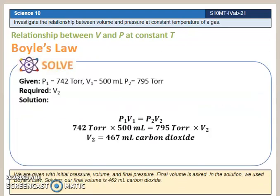We are given initial pressure, volume, and final pressure. Final volume is asked. In the solution, we use Boyle's Law. Solving, our final volume is 462 milliliters carbon dioxide.